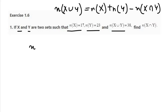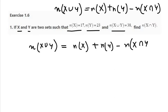We need to use the same formula as I have written earlier. n(X union Y) equals n(X) plus n(Y) take away n(X intersection Y). We have the value for X union Y that is 38, and we have n(X) that is 17, n(Y) that is 23.